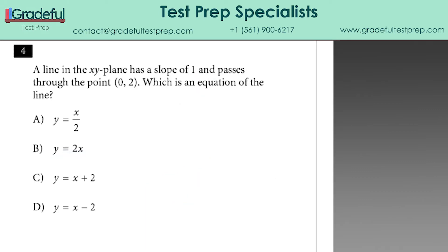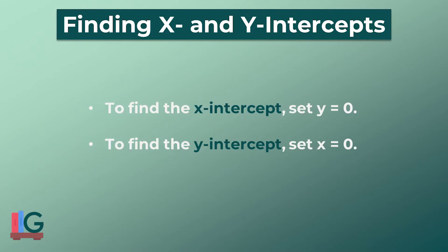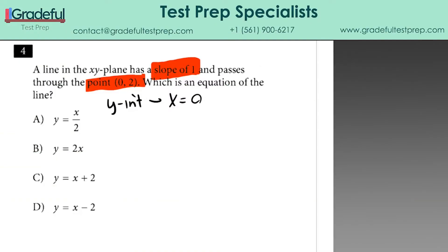For number 4, we're being given the slope of 1 and the y-intercept too. How do we know this is a y-intercept? Because for the y-intercept, x is 0, and the x-intercept is where y equals 0. So we're being given a slope and a y-intercept, so we can use slope-intercept form, y equals mx plus b. Put in the slope of 1 and the y-intercept of 2, and that's y equals 1x plus 2, which is answer choice C for number 4.